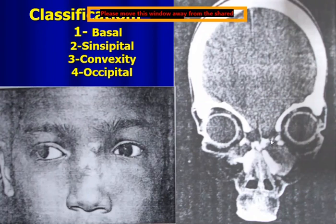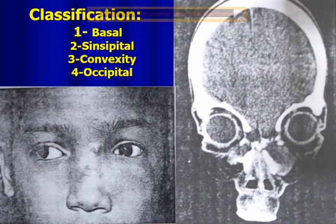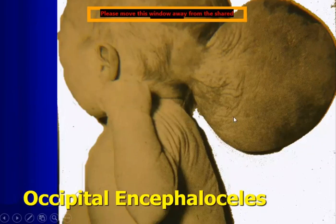Here is a basal type in this picture, showing protrusion inside the nasal cavity — this is the encephalocele. Here is a sphenoidal type, which can be in the vertex or semi-convexity. And here is the occipital encephalocele at the occipital region.